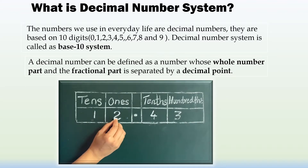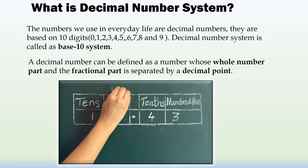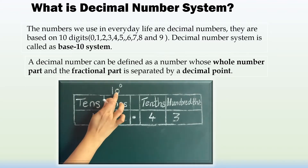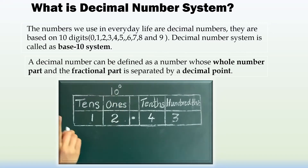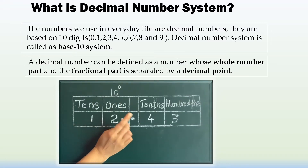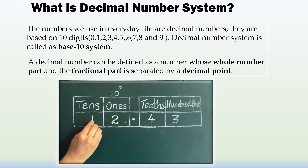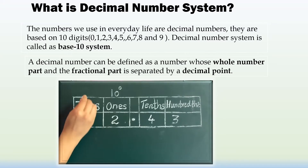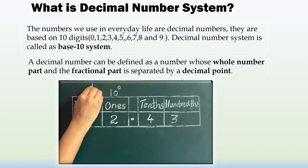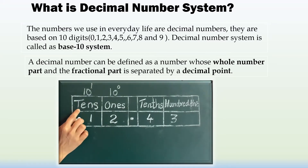The place value of this digit 2 is 10 to the power 0. Since 10 power 0 is 1, that's why it's called the 1s place. The place value of this digit 1 is 10 to the power 1. Since 10 power 1 is 10, it's called the 10s place.